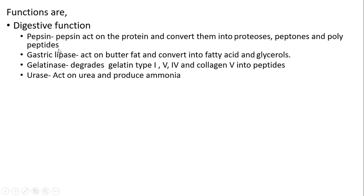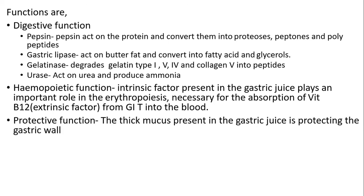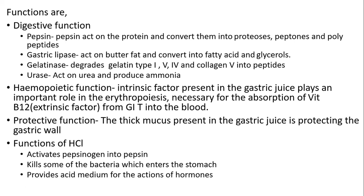Functions of gastric juice: digestive function — pepsin acts on protein and converts it into proteoses, peptones, and peptides; gastric lipase acts on butter fat and converts it to fatty acids; gelatinase degrades gelatin types 1, 5, and 4 and collagen type 5 into peptides; urease acts on urea and produces ammonia. Hemopoietic function — the intrinsic factor present in gastric juice plays an important role in erythropoiesis and is necessary for absorption of vitamin B12 (extrinsic factor) from the GIT into the blood. Protective function — the thick mucus protects the gastric wall. Functions of hydrochloric acid include: activating pepsinogen into pepsin, killing bacteria that enter the stomach, and providing an acid medium for the actions of enzymes.